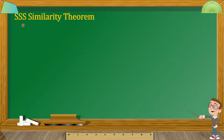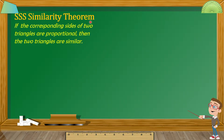Define muna natin ano ba yung SSS Similarity Theorem. Based dyan sa theorem na yan, if the corresponding sides of two triangles are proportional, then the two triangles are similar. Given na meron tayong dalawang triangle, kapag yung three corresponding sides ng dalawang triangle na yun ay proportional, then masasabi natin na yung dalawang triangle na yun ay similar.